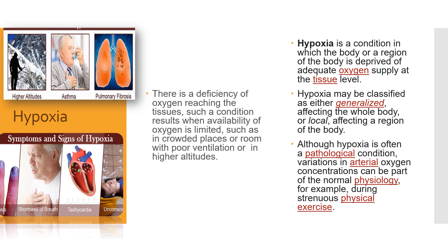Now let us look at the term hypoxia. Hypoxia is a condition in which the body or a region of the body is deprived of adequate oxygen supply at a tissue level. Hypoxia may be generalized, affecting the whole body, or it may affect only a local part — for example, the hands or the heart may not have proper oxygen supply.